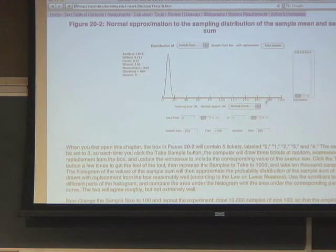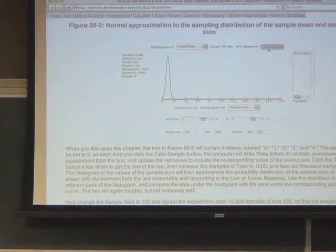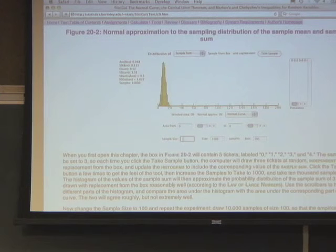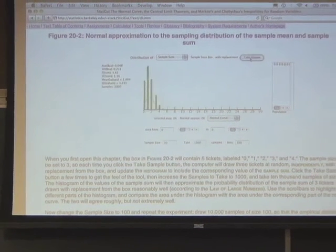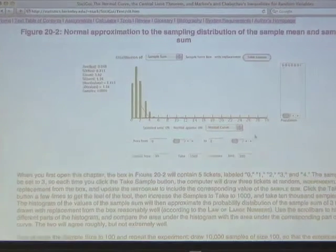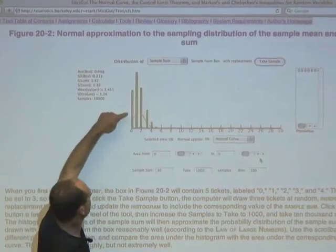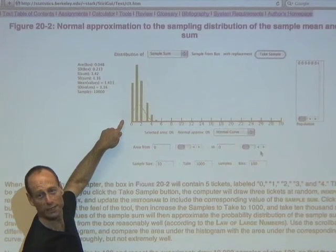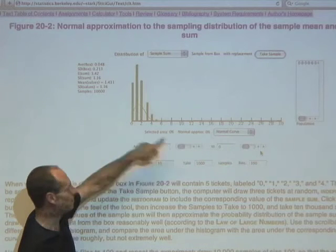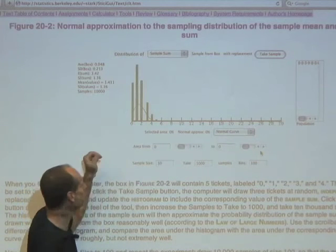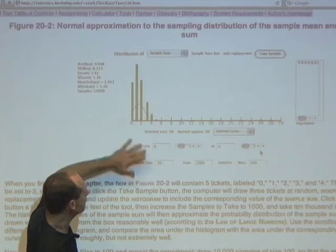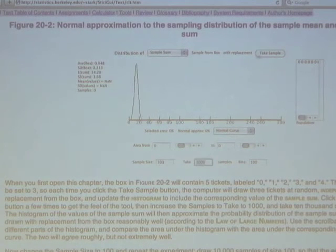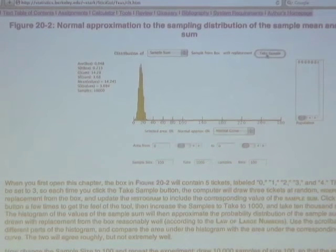So now if I look at the normal approximation, this is still a big enough sample that this isn't so bad. Let me take this back down to 30. So here the normal curve is kind of wanting there to be some probability out here to the left of 0. But there can't be, because if you add positive numbers, you can never get a negative number, right? But as the number of draws increases, by the time we get to 300 draws, the normal approximation, again, is really not that bad.